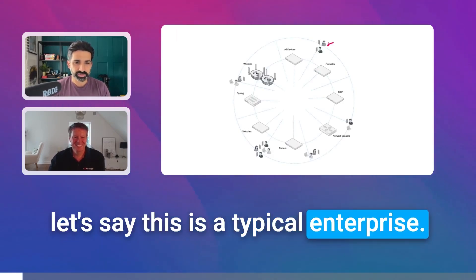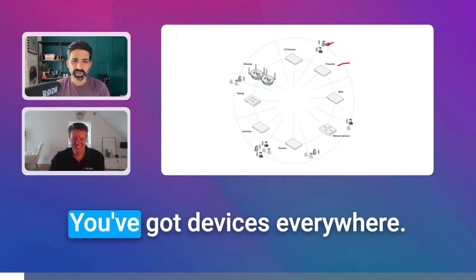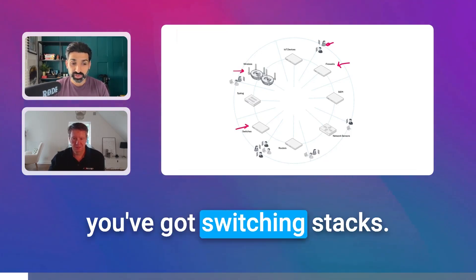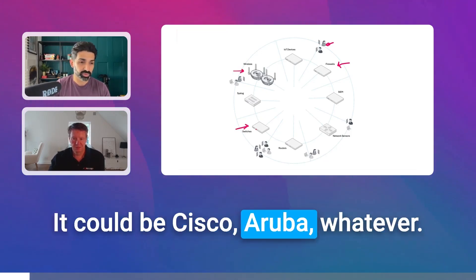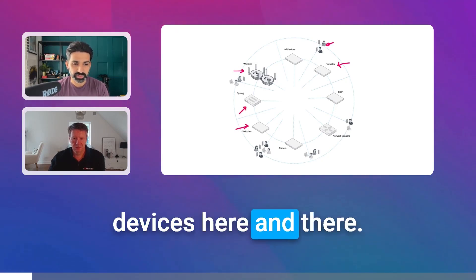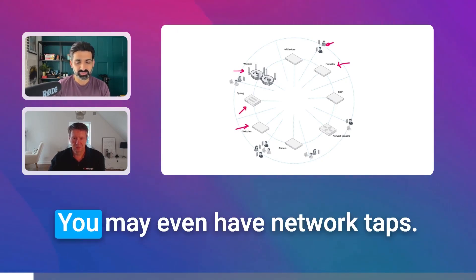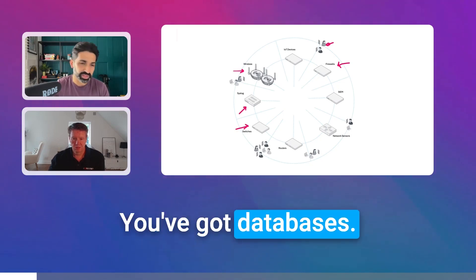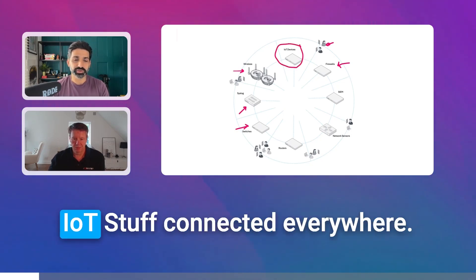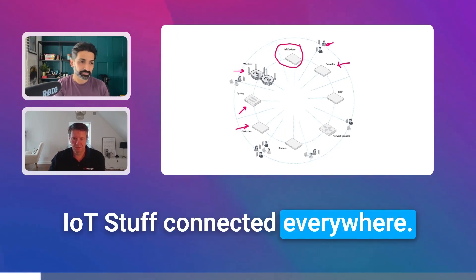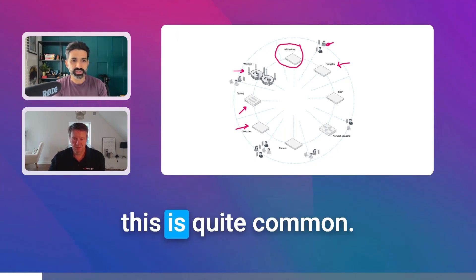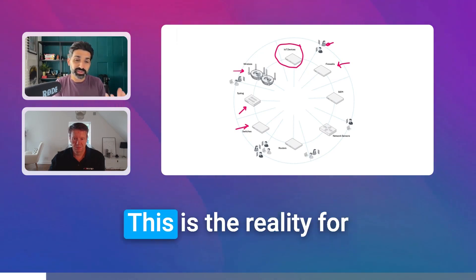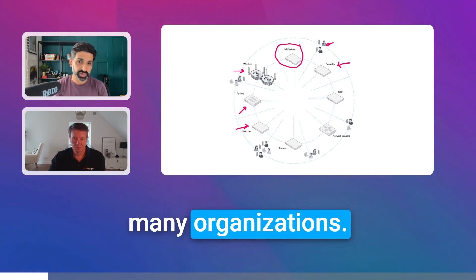Let's say this is a typical enterprise. You've got users over here, devices everywhere, wireless stacks, switching stacks — could be Cisco, Aruba, whatever. You'll have syslog devices here and there, routers, maybe network taps, SIEMs, applications, databases. And most importantly, you have IoT stuff connected everywhere. In the modern enterprise this is quite common — it doesn't have to be a large enterprise; it could even be small businesses. This is the reality for many organizations.